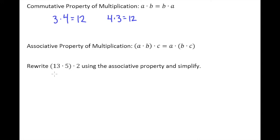So starting off with what we already have: (13 times 5) times 2. According to the associative property, that is equal to 13 times (5 times 2) in parentheses.